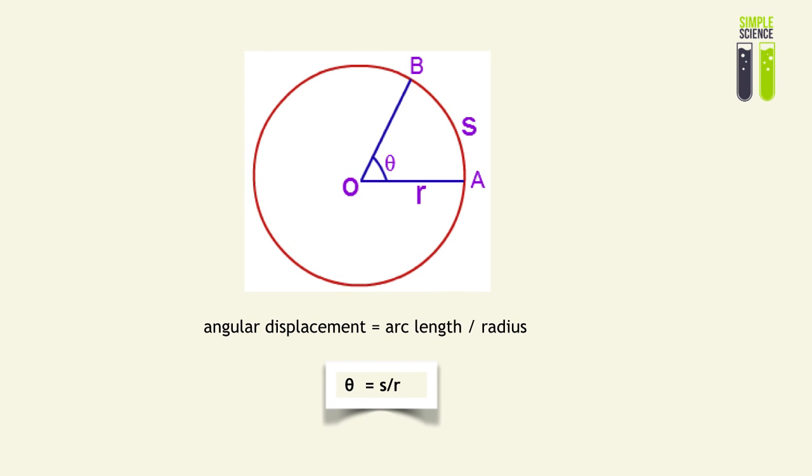Angular displacement is formulated to be equal to arc length divided by the radius, so it's literally s over r. More commonly, we see this equation as the arc length equals the angular displacement multiplied by the radius.